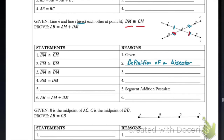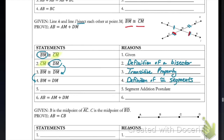Line three says BM is congruent to DM. We have to be a little careful here. If we notice in lines one and two, we get that BM and DM are both congruent to CM. So by the transitive property, we are going to get those two segments congruent. From lines three to four, not much changes — we just go from segment BM is congruent to DM to the length BM is equal to DM. This is important because we're going from the figures to the measures, which allows us to use algebra. We can get that by the definition of congruent segments, because to be congruent just means the segments have equal lengths.